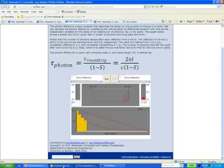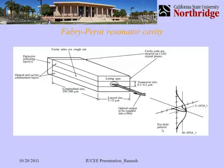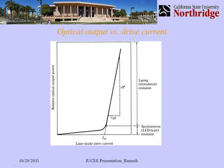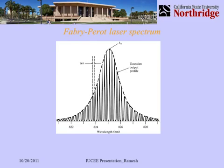A distributed feedback laser is one example. A typical PI curve shows that we want to operate on the linear region above threshold. A multimode laser produces multiple spectra; this particular one operates at about 840 nanometers and has a Gaussian output profile, also describable with a Lorentzian function. One can model the individual modes and their properties as they connect to the optical fiber.